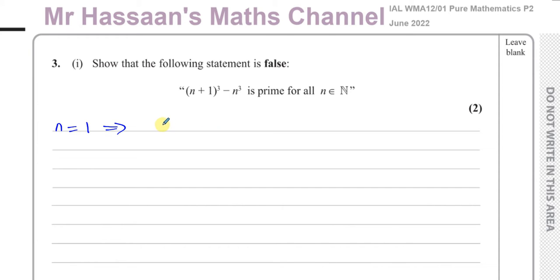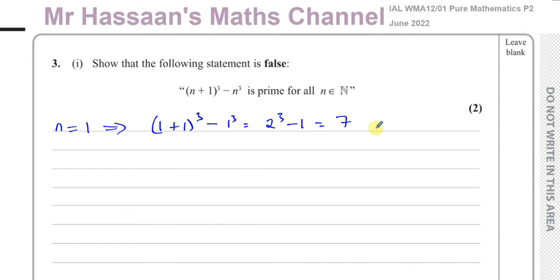If we put n equals 1, we have (1+1)³ minus 1³, which is 2³ minus 1, which is 8 minus 1, which is 7. And 7 is prime, so this doesn't prove it false.